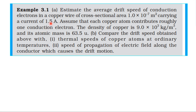From inside the textbook, from the topic current electricity, learn example 3.1, sub-question 1. Estimate the average drift speed of conduction electrons in a copper wire of cross-sectional area 1 × 10⁻⁷ meter square, carrying a current of 1.5 ampere.